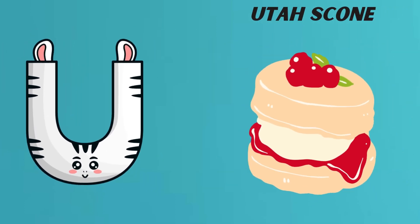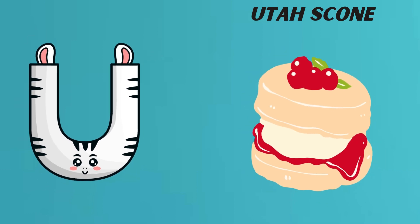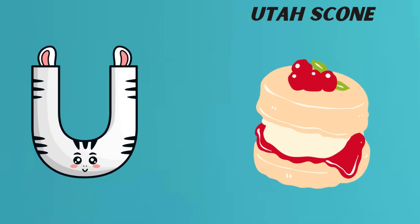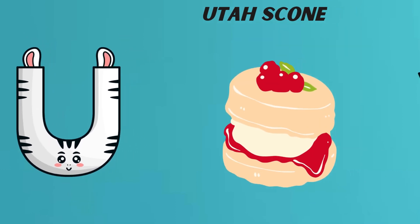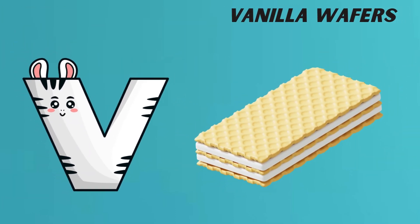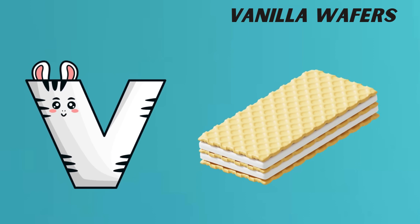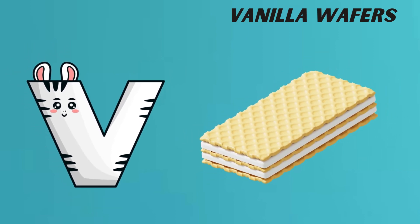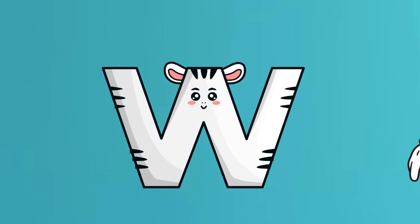U is for Utah Skull. Utah Skull. V is for Vanilla Wafers. Vanilla Wafers.